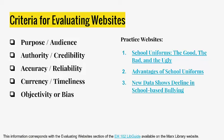There are five basic criteria for evaluating websites: Purpose and Audience, Authority and Credibility, Accuracy and Reliability, Currency and Timeliness, Objectivity or Bias, and Structure Navigation. To explore these criteria, we're going to use three practice websites. These websites are linked at the bottom of each slide, and you can also find the links below this video.